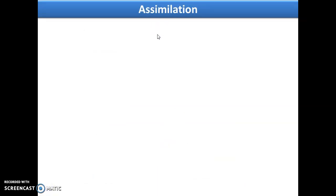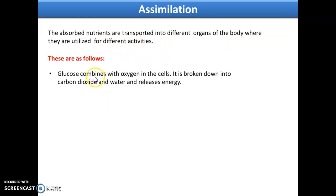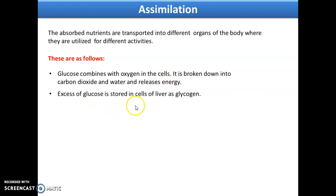Assimilation: the absorbed nutrients are transported to the different organs of the body where they are utilized for different activities. Once glucose and oxygen enter the cell, they are broken down and converted into carbon dioxide, water, and release lots of energy. This process is called cellular respiration, by which the organism gets its energy. Excess glucose is stored in the cells of the liver as glycogen.